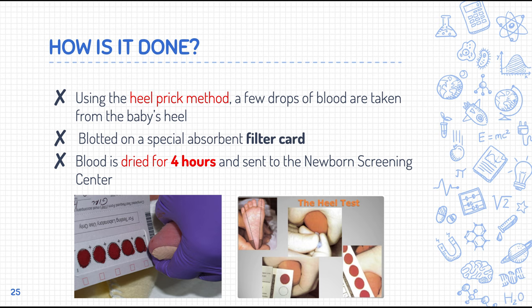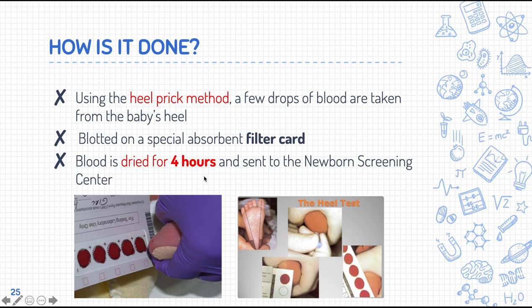Newborn screening is performed by collecting a sample using a filter card through the heel prick method. A few drops of capillary blood are taken from the baby's heel and blotted on a special absorbent filter paper, which becomes the specimen holder.